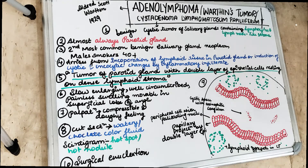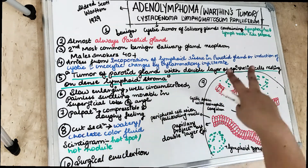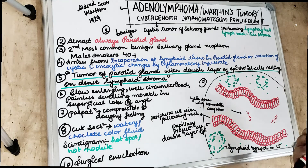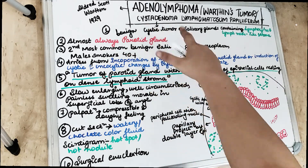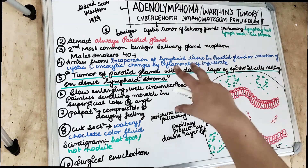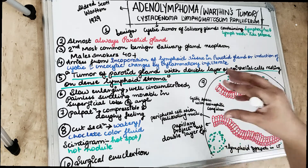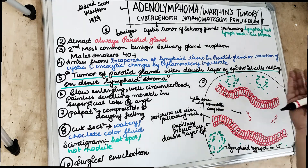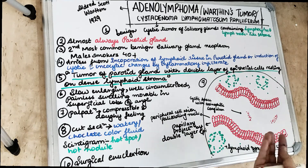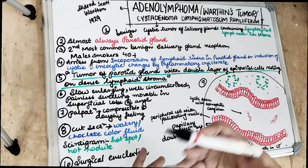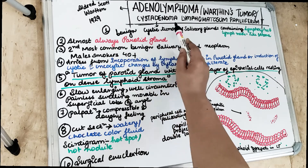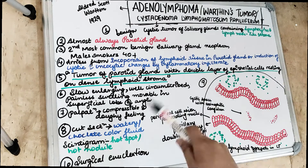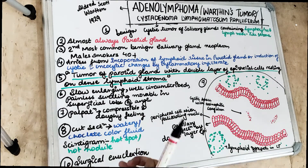Adenolymphoma arises from the incorporation of lymphoid tissue in the parotid gland — the most commonly involved site. There is also induction of cystic or oncocystic changes. So there are going to be both cystic changes and neoplastic changes, making it a cystadenoma as the name suggests. Both these changes — cystic and benign tumor changes — can be seen in the connective tissue.